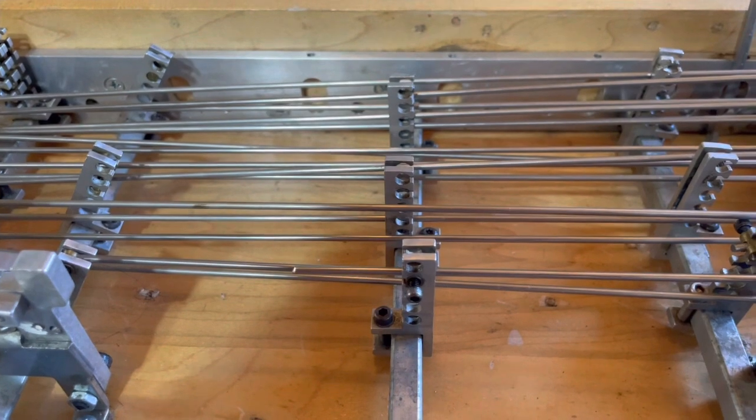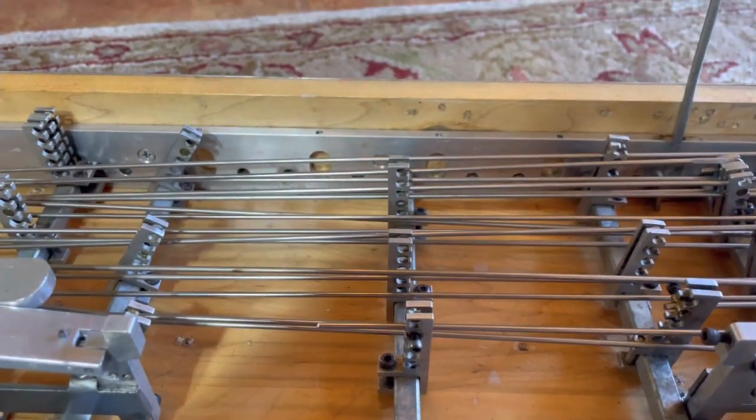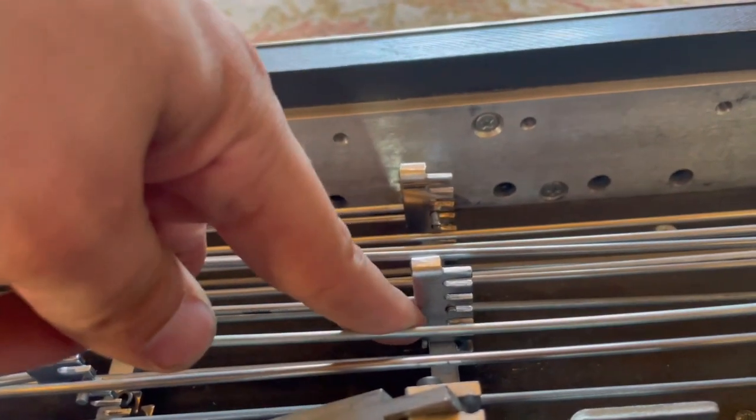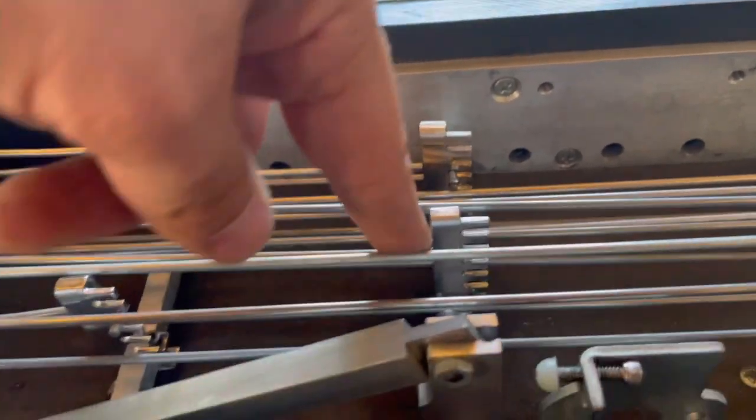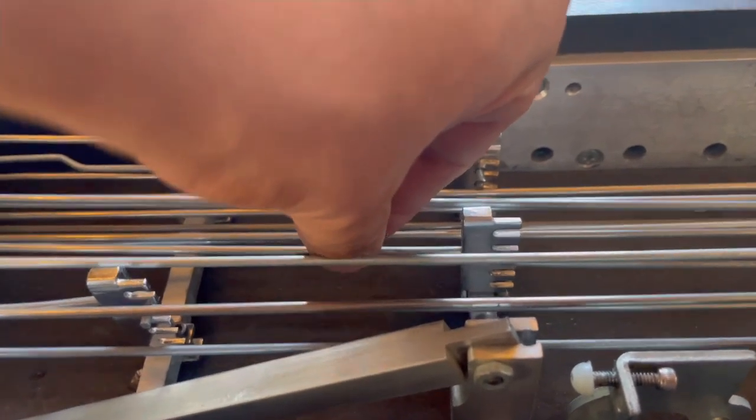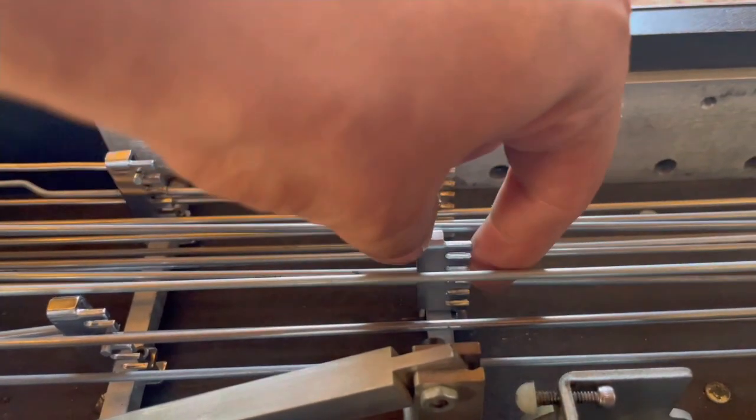But way more of a pain than on the Fessenden. You can see the Fessenden has little forks. So the rod's bent. If you want to change which hole, all you have to do is loosen up the nylon tuner and then slide it into the next hole.